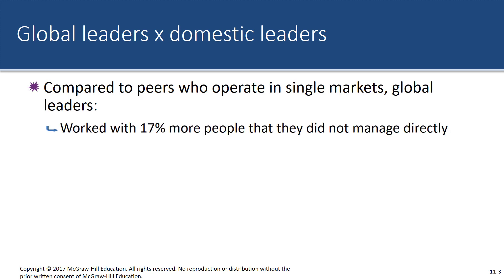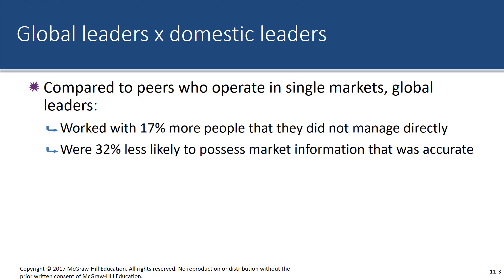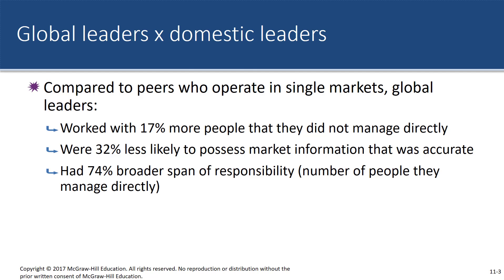Compared to peers who operate in single markets, global leaders work with 17% more people that they did not manage directly. They're 32% less likely to possess accurate market information, because in many countries accurate market information is very hard to come by, especially outside the first world. They also have a 74% broader span of responsibility in terms of the number of people they manage, and work with 160% more stakeholders — people who are involved with and care what happens to the company.